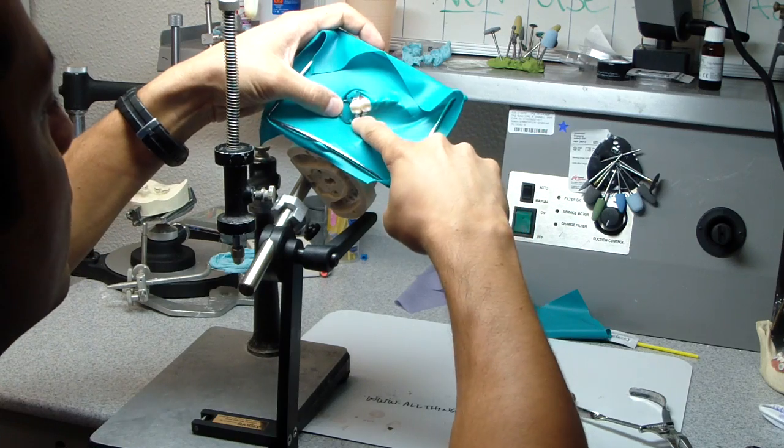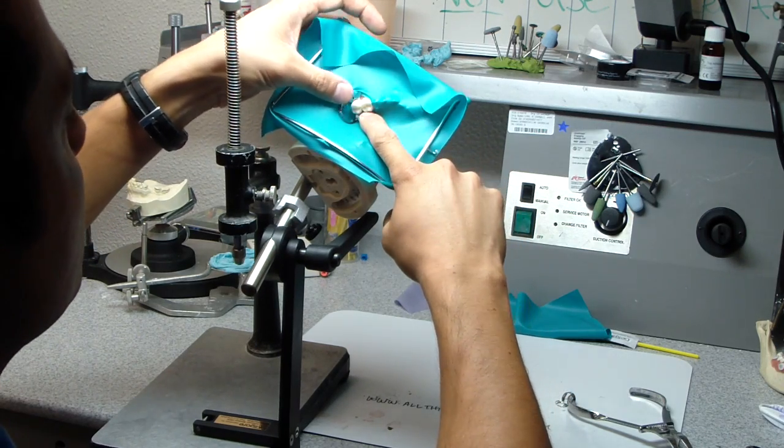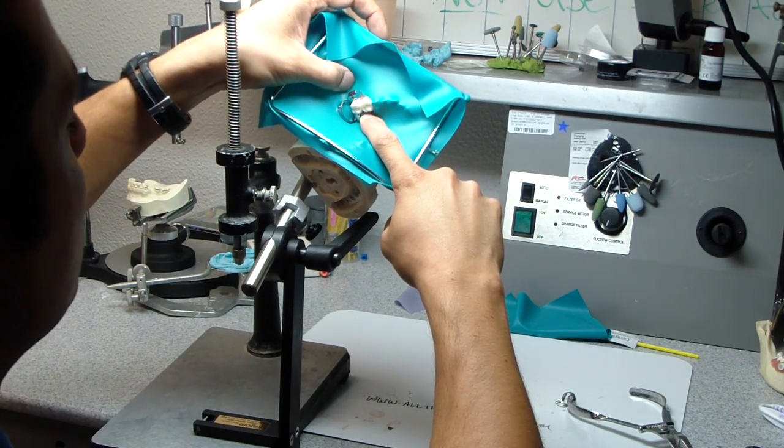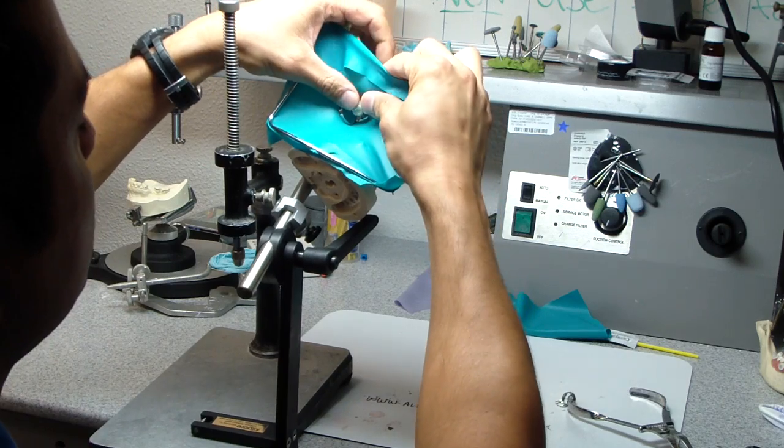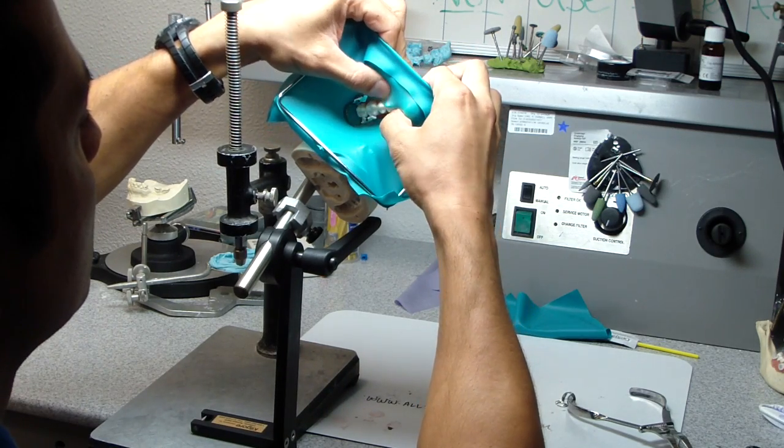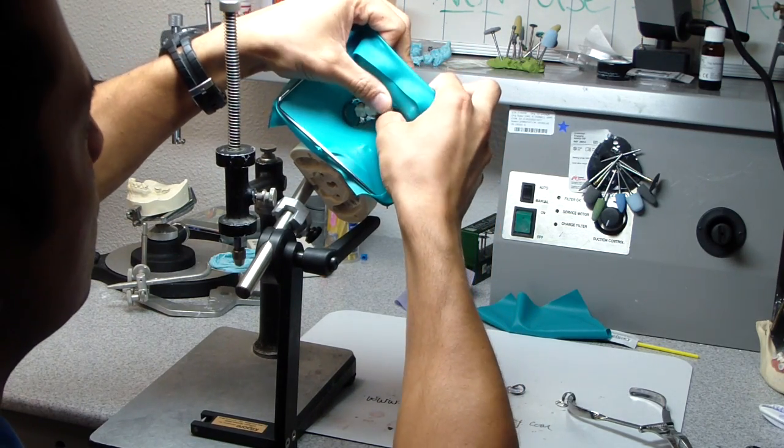Say we're restoring tooth number one, six, or three, and we're going to snap the rubber dam underneath the wings. And then I'm going to pull it forward to whatever I need to.